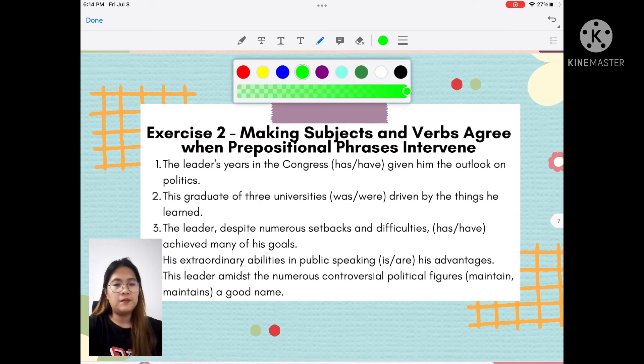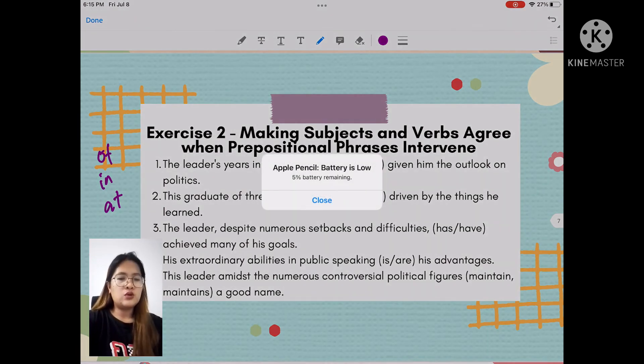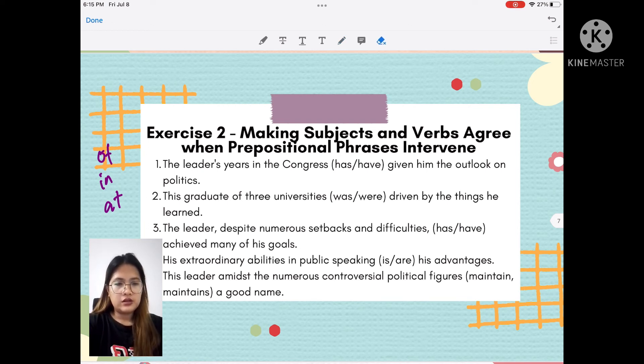Exercise 2. This will be the last one. So, making subjects and verbs agree with the prepositional phrases that intervene yung of, in, at, etc. So, ayan. Let's use purple. The leader's years in Congress has or have given him the outlook on politics. So, ano yung mga nouns natin dito? Ayan. Loba na daw. Leaders. Leaders years. Actually, it's years. If it's the noun per se, then Congress. Pero, dahil may in nito, hindi mo napapansin nito. So, years has an S. So, dapat, ano sagot dito? Plural to. So, dapat have. Correct.